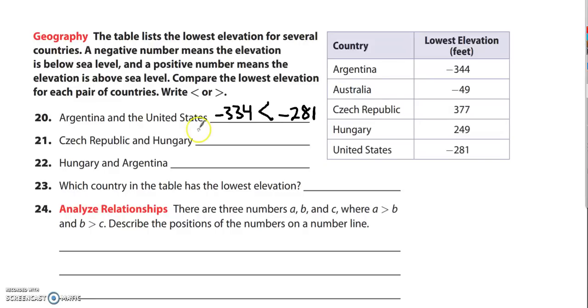The next one, Czech Republic is at 377 and that's positive, and that's being compared to Hungary, which is 249. And these are both positive, so it's not really very difficult. A number in the 300s would be greater than a number in the 200s.